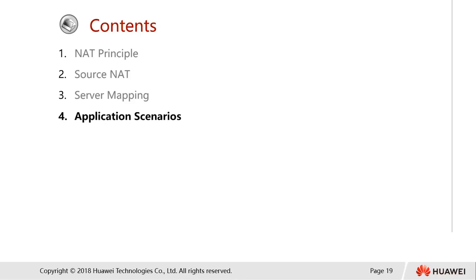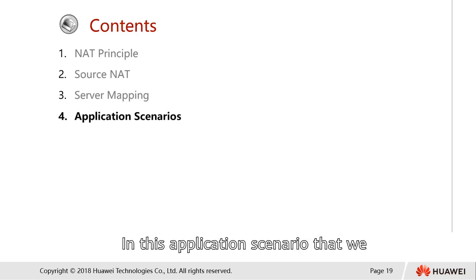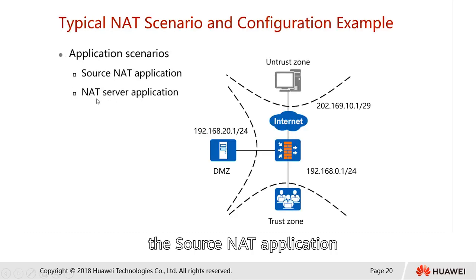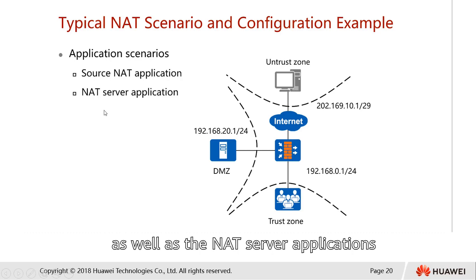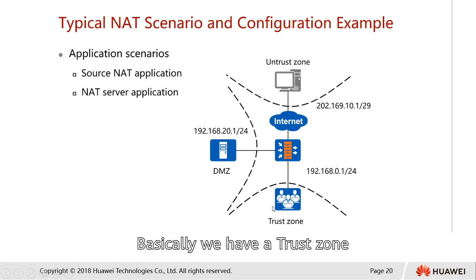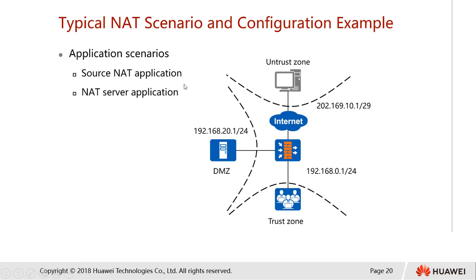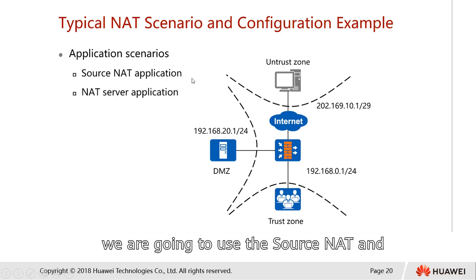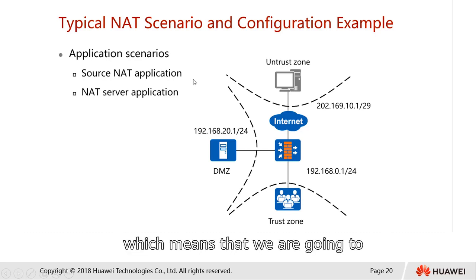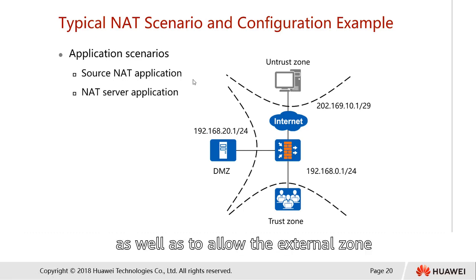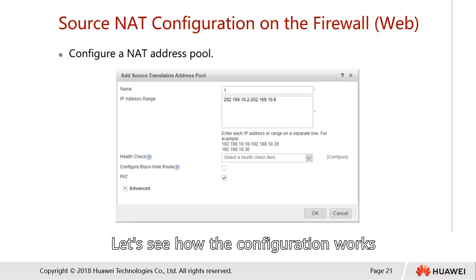Next, we see the application scenario. In this scenario, we are going to see the source NAT application as well as the NAT server applications. We have a trust zone 192.168.0.1/24 network, a DMZ at 192.168.20.1, and an untrust zone at 202.169.10.1. We are going to use source NAT and NAT server, allowing internal users to go out to other zones. Let's see how the configuration works.